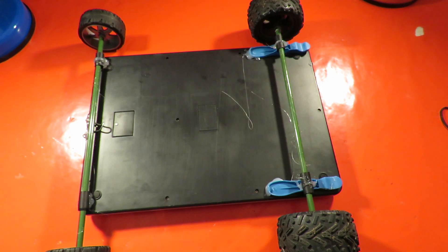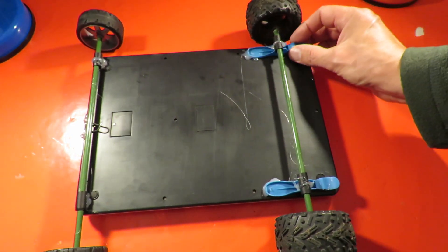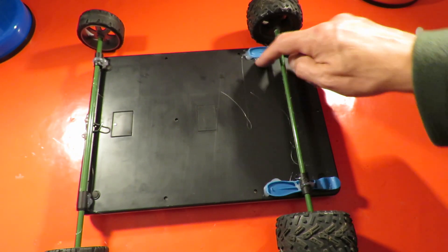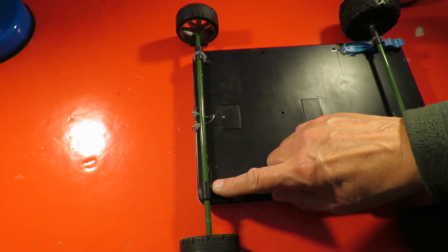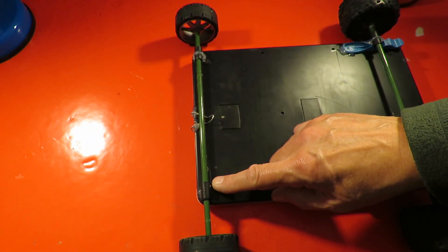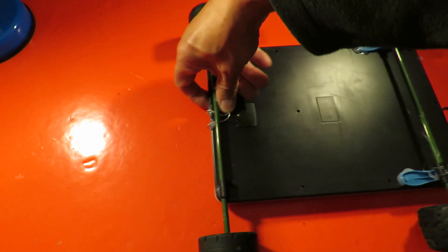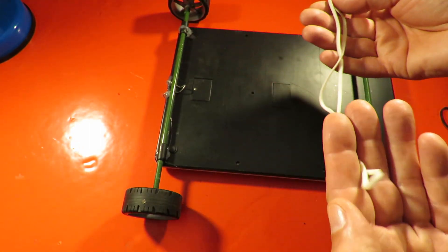There we are. Axle tubes raised up on bits of clothes pegs hot glued in place. Axle tubes at that end don't need to be raised up, they're high enough anyway. Bit of bent wire at the front there for the rubber band.